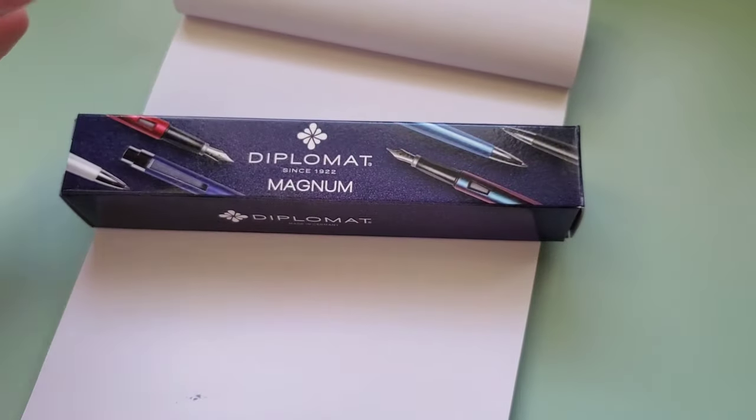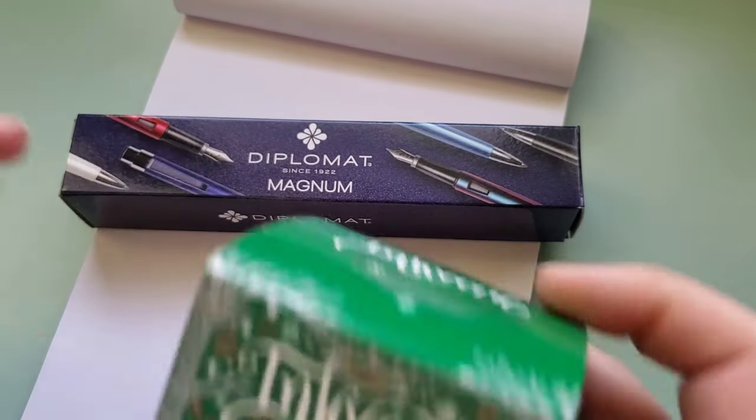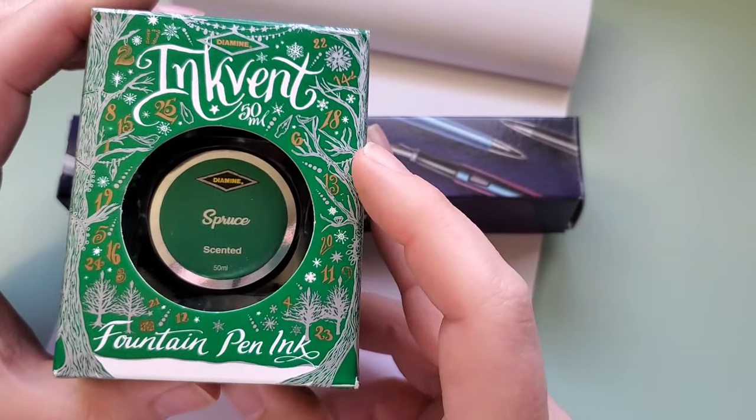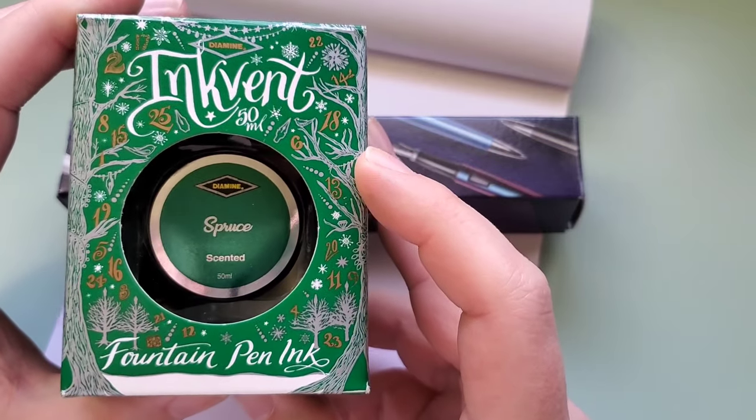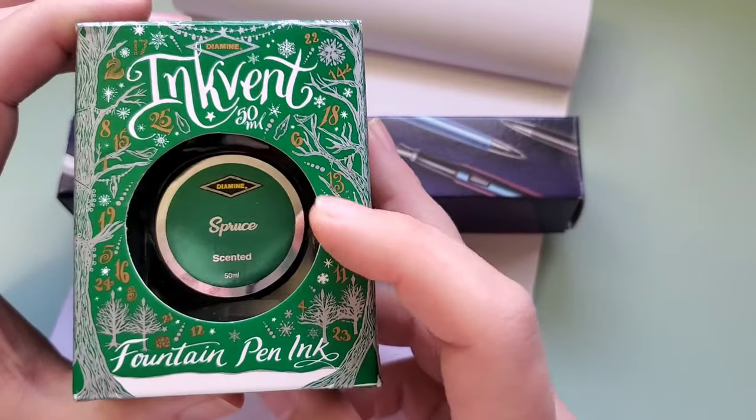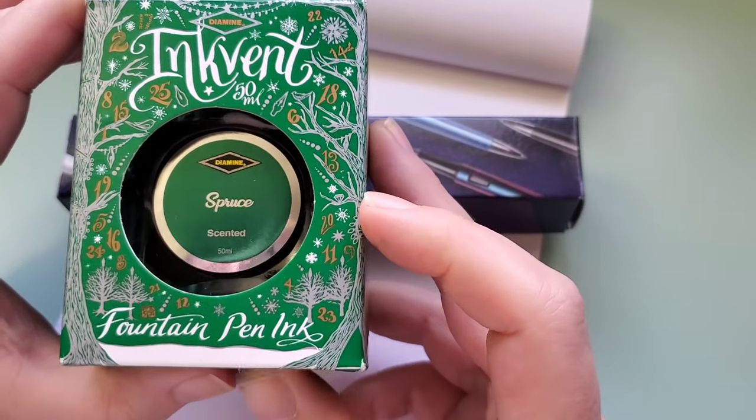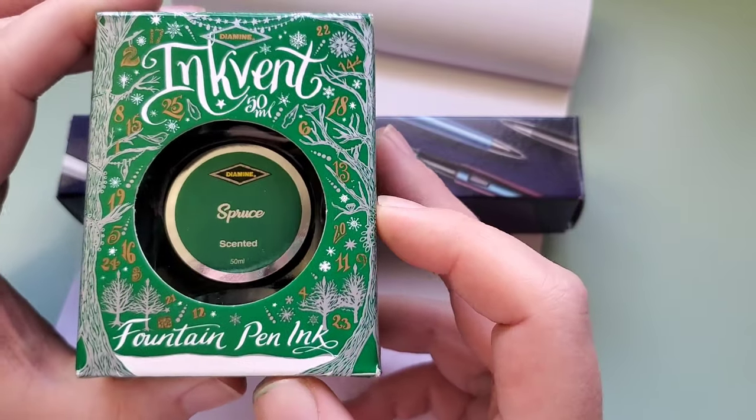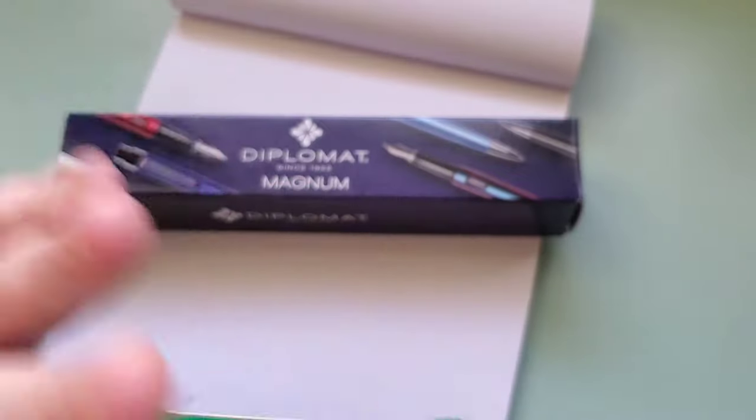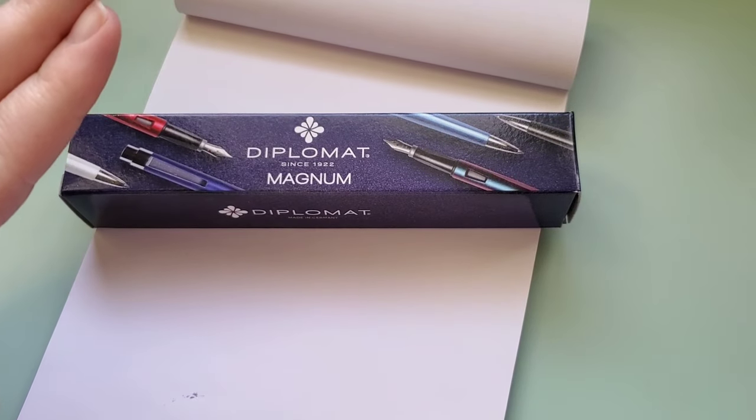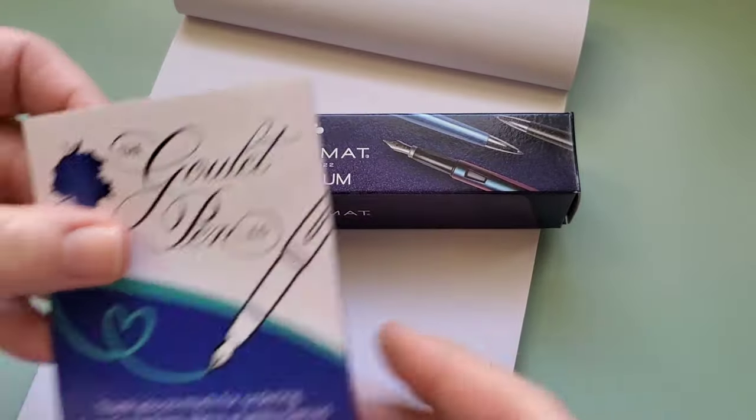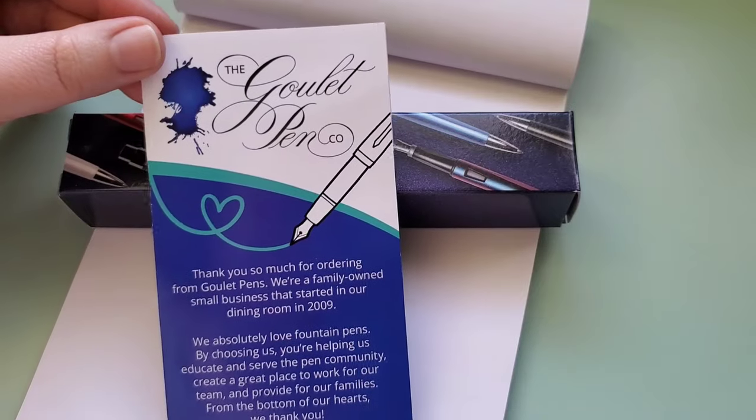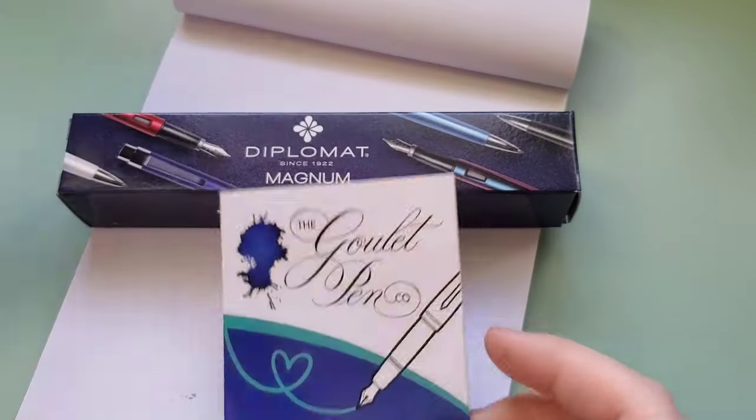Let me back up a little bit. What I needed to do, and this is a need for sure, I needed to buy a bottle of Diamine Spruce, which was from the Inkvent from 2022. It was my favorite ink in the Inkvent that year, and it's the best scented ink that I've ever tried. Goulet Pens had it in stock, so I purchased it, and I thought I would add a few things to my cart and decided to add a pen.